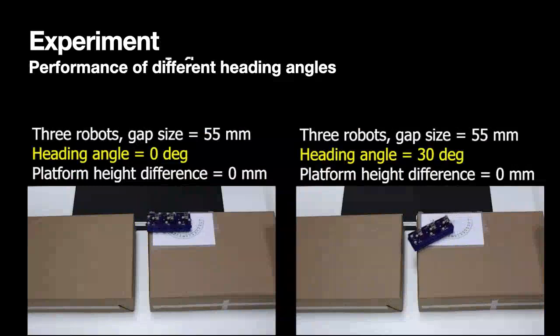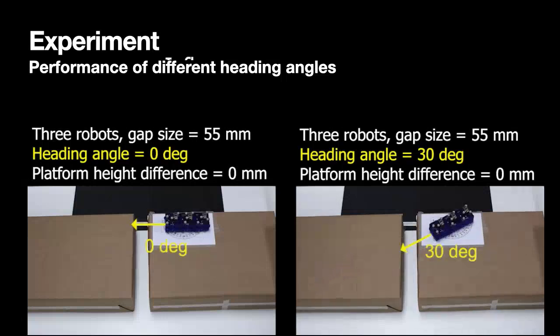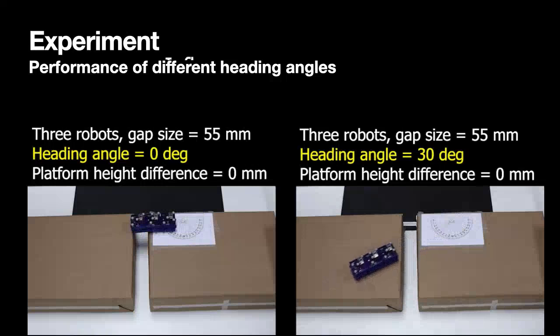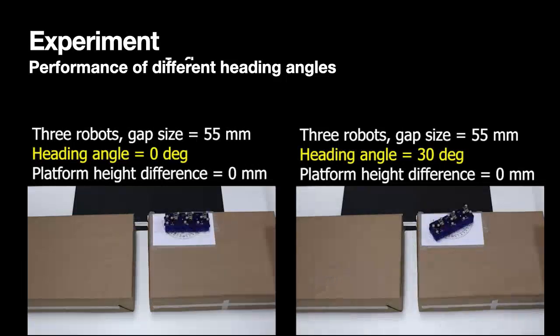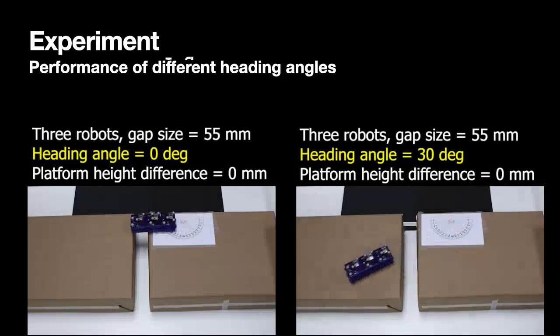There are various parameters that influence the performance of this gap crossing behavior. For example, here we are showing the result of different heading angles. The left is the result of 0 degrees and on the right is 30 degree heading angle. We may see that the 30 degree heading angle one is able to cross this gap. This is mainly because by having a heading angle difference, the robot is longer on the diagonal so it's able to cross a larger gap size.